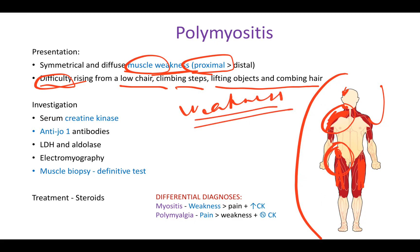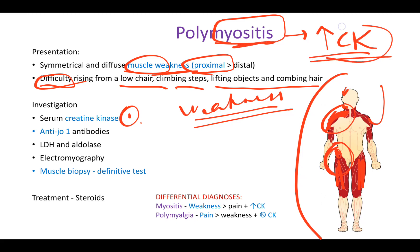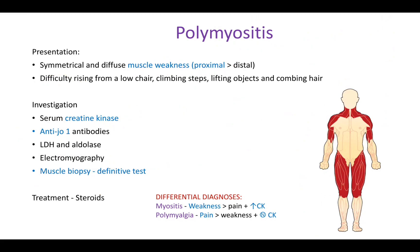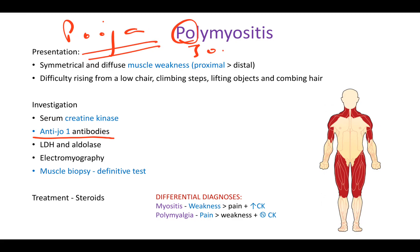For investigations, the first test is serum creatine kinase (CK), which is elevated because muscle inflammation causes CK to rise. LDH and aldolase are also elevated. Electromyography (EMG) is done to see what is happening with the muscles, and the most definitive test is muscle biopsy, which shows the inflammation. The most specific antibody associated with this disease is anti-Jo-1 — remember it as 'anti-Jo.' Treatment is steroids, since there is inflammation.